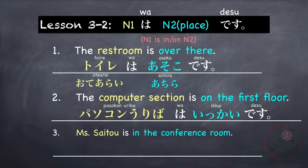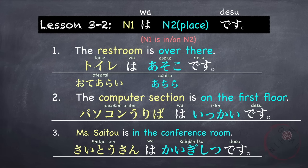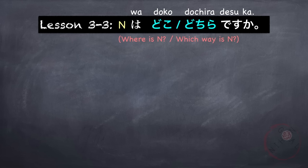Third example: 'Miss Saito is in the conference room.' Saito-san wa kaigishitsu desu. You can also say this in another pattern: Saito-san wa kaigishitsu ni imasu — same meaning. But you will learn that pattern in lesson 10. For now, you can say: Someone wa [place] desu, meaning someone is in this place.